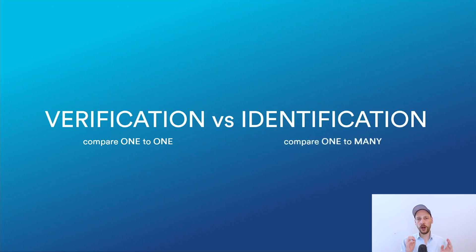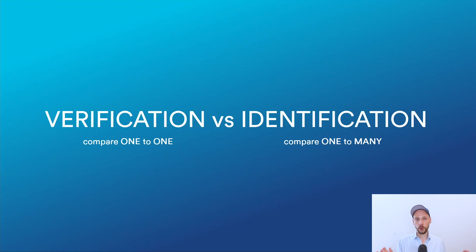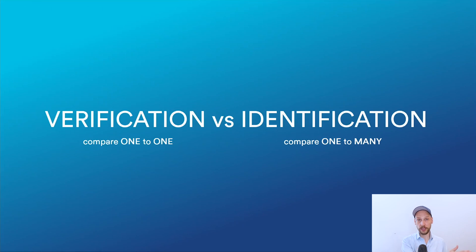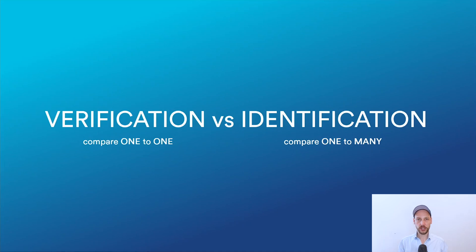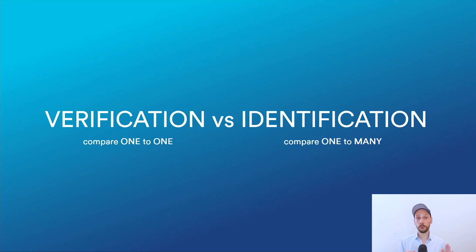Identification is vastly different because it's a one-to-many comparison. For example, if we had face recognition at Times Square with 100 people, we'd need to compare each person against our entire database. With a database of one million people, that's 100 million comparisons every second of video — and a million is actually a small number. Compare that to verification, which is just one comparison. That's why verification is a much more mature technology, used for access control, while identification is still improving and needs careful consideration for deployment.